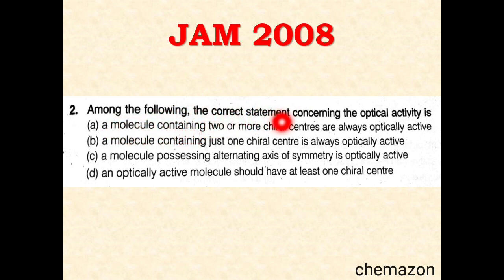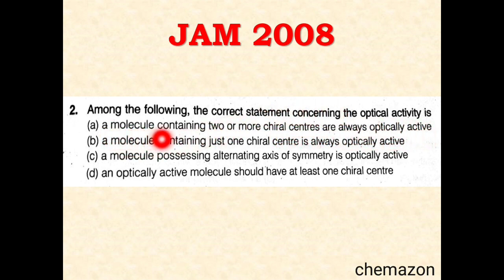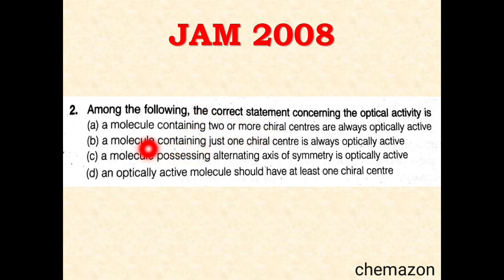The question asks: 'Among the following, the correct statement concerning optical activity is.' Option A states a molecule containing two or more chiral centers is always optically active — this is not true. We will see in coming videos that meso compounds have a minimum of two chiral centers but a meso plane passes through the molecule making it achiral, so two or more chiral centers do not guarantee optical activity.